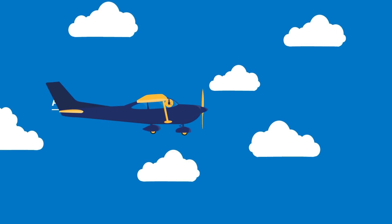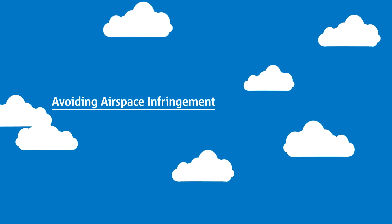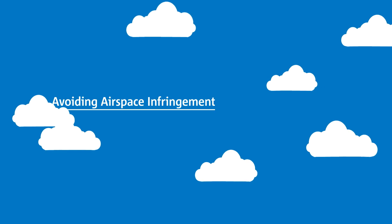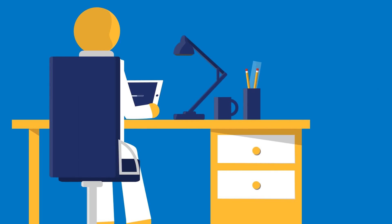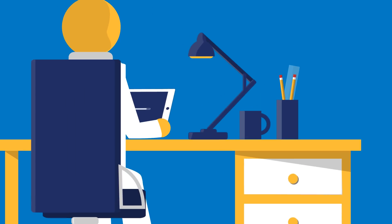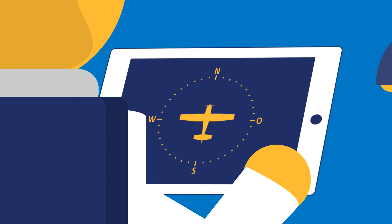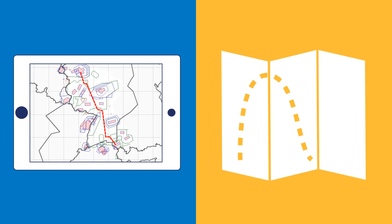You're preparing a scenic flight with friends. Well in advance, you plan your flight thoroughly, step by step. The best way to do this is to use up-to-date flight preparation software. And in addition, remember to cross-check and exercise your basic navigational skills with paper charts.